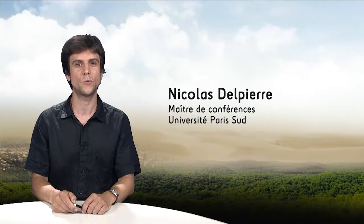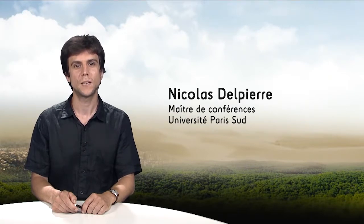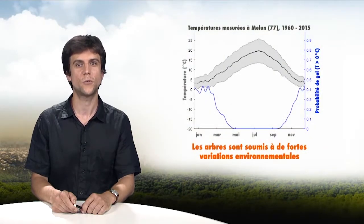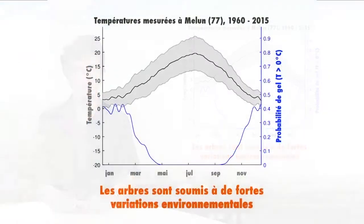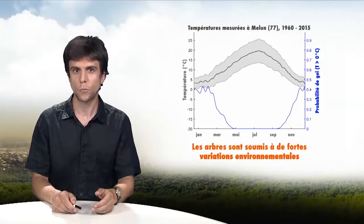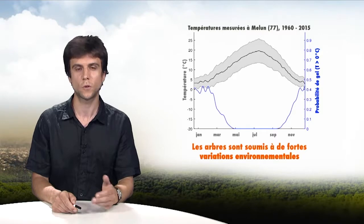Trees are motionless living things that live dozens or sometimes hundreds of years, so they are subjected to major environmental influences such as the change of seasons. You can see here the seasonal variations of temperatures that trees are subjected to. In tropical climes, that's usually not a problem because the temperature is high all year round, but in colder areas, this can create problems.